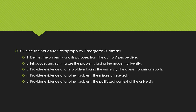In addition to outlining the content, it's also a good idea to outline the structure — that is, what's the function of each paragraph, not just what it's saying. Going through the same paragraphs: paragraph one is where the authors define the university and its purpose from their perspective — this is where they give us their thesis. Paragraph two introduces and summarizes the problems facing the modern university. Paragraphs three, four, and five each provide evidence or an example of one of the problems: the overemphasis on sports, the misuse of research, and the politicized context of the university.